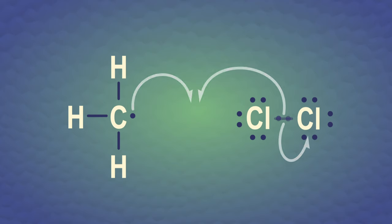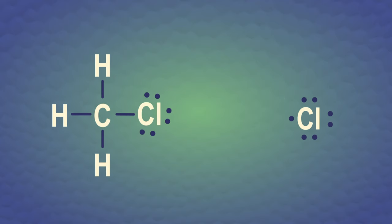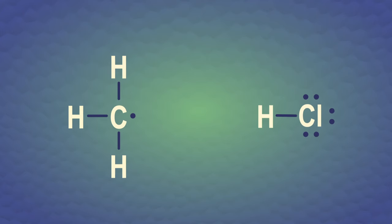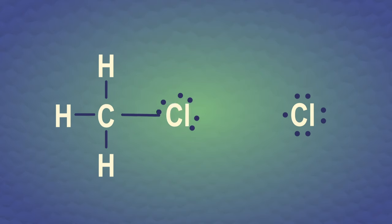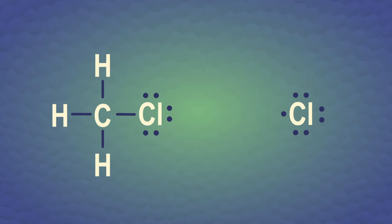Then, this methyl radical can react with diatomic chlorine to make chloromethane, plus another chlorine radical, which can continue the propagation stage by reacting with another molecule of methane. The steps of the chain reaction repeat, and the dance party rages on.